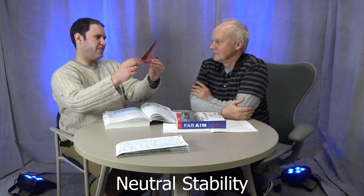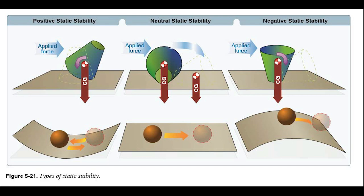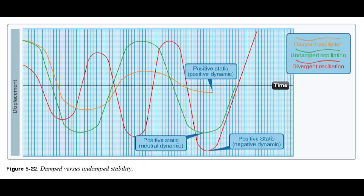Positive stability means the airplane wants to come back to level after a disturbance. Negative stability means it keeps going further over. If it just stays where you put it, that's neutral stability. RC trainer planes with dihedral have very positive dynamic stability — the old advice was if you get in trouble, just let go of the sticks and it'll come back. There are graphs on figures 5-21 and 5-22 showing static and dynamic stability — positive, neutral, or negative — and how they develop over time.